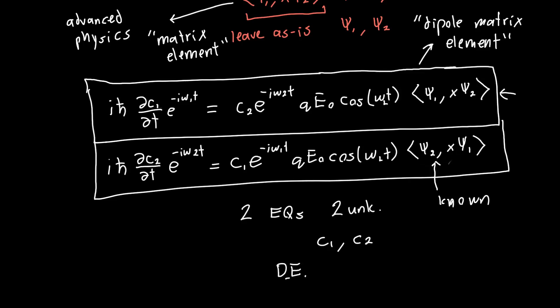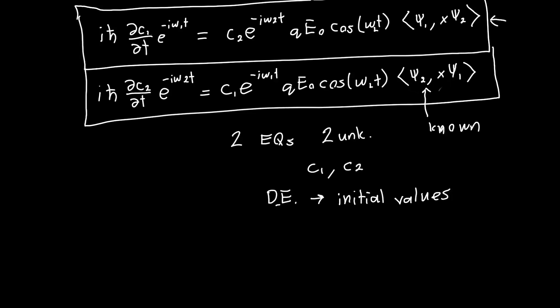That will be the subject of the next video. Remember that we initially assumed that we had an electron just in state 1, and we're interested in seeing what happens as the system evolves. So we know that c1 at time 0 is equal to 1, and c2 at time 0 is equal to 0. This will be the subject of future videos, actually solving these differential equations.